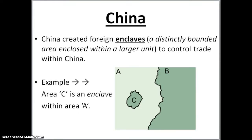Let's talk about China. China is going to welcome the European people into their country for trading purposes. And China is going to create what's called an enclave, which is a distinctly bounded area enclosed within a larger unit. This is how China is going to control trade within its borders.